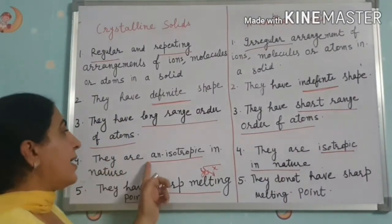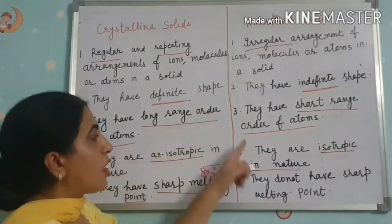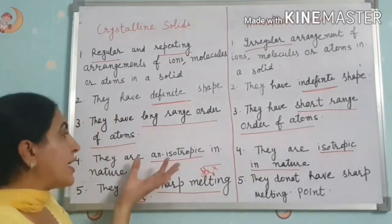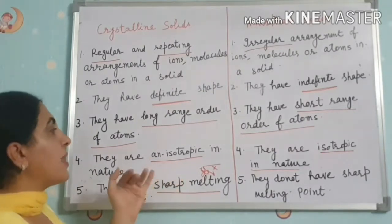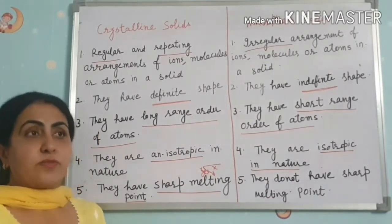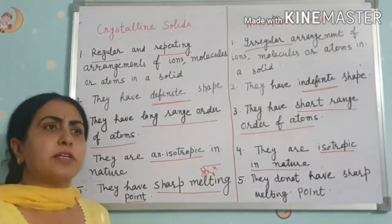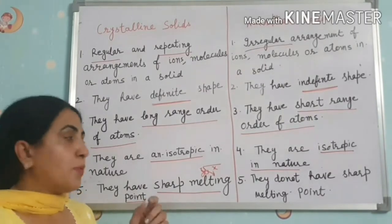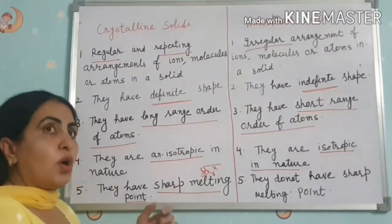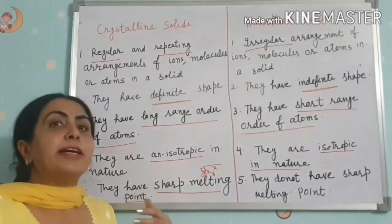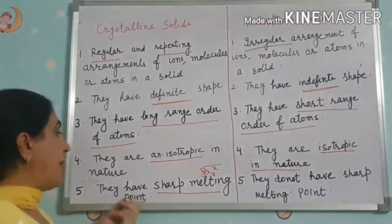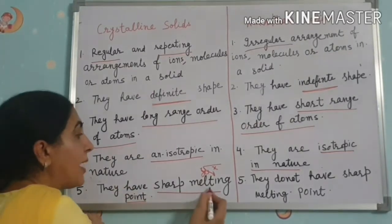The fourth point is very important: crystalline solids are anisotropic in nature, and amorphous solids are isotropic in nature. Anisotropic means different physical properties — like optical and mechanical — are different in different directions. For example, if we measure linear density in one direction its value is x, but in another direction the value will be y. Isotropic means these properties are the same in all directions.